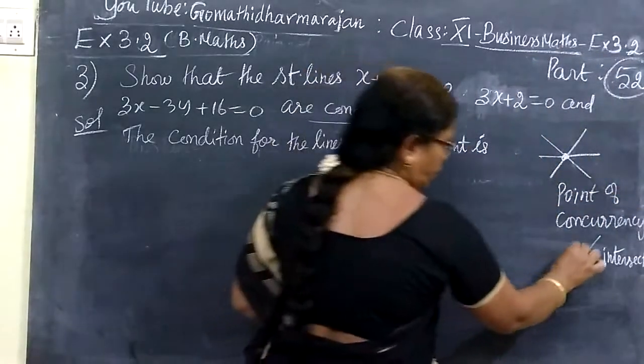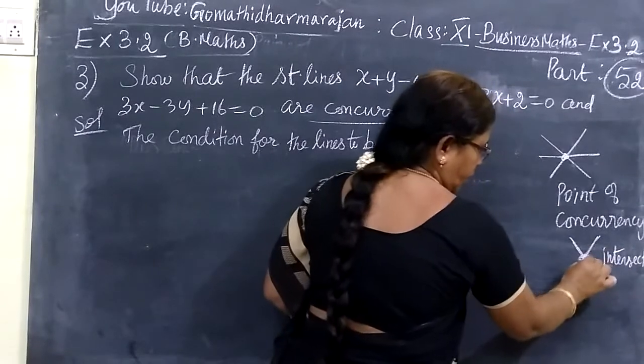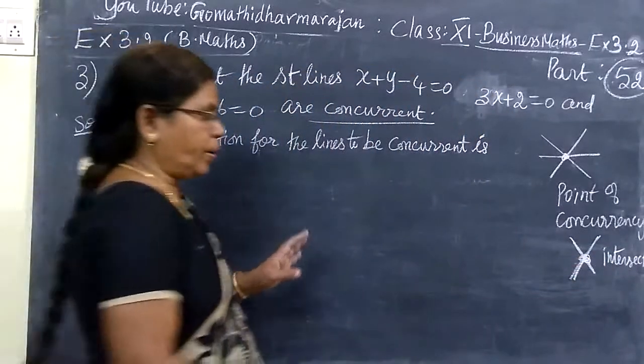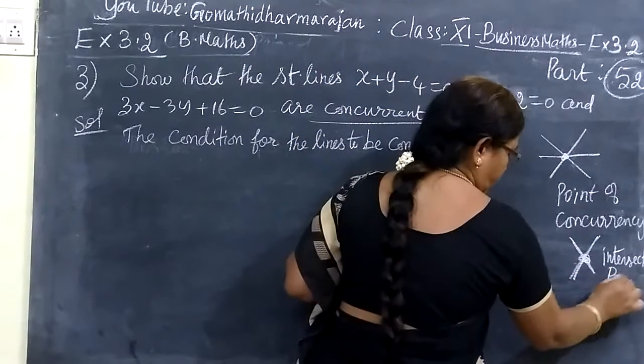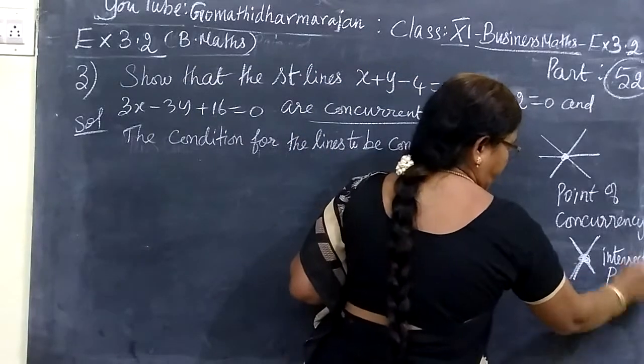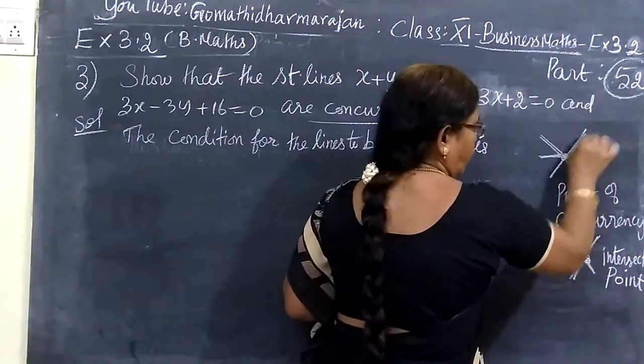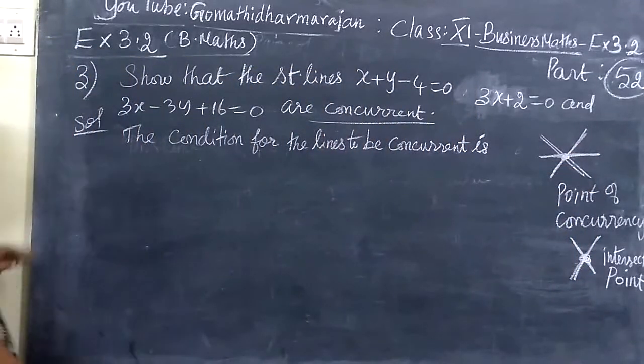Intersecting are only 2 straight lines. All points are the intersecting point. Point of concurrency is more than 2 lines passing through the same point.